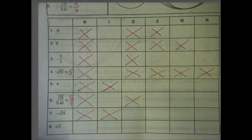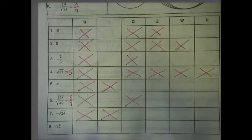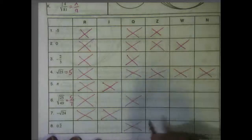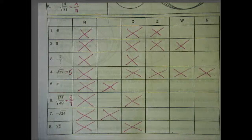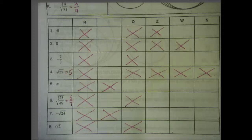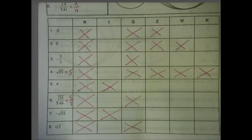Last, number 8: we have 0.2 repeating. 0.2 repeating is a repeating decimal, and rational numbers include repeating decimals. Rational numbers are also real. So after you've finished your video notes and your review, you may go to the homework. Remember that homework 1 for the real number system is the first sheet that's going to be due for your homework assignment when you come back in August. We'll see you next time.